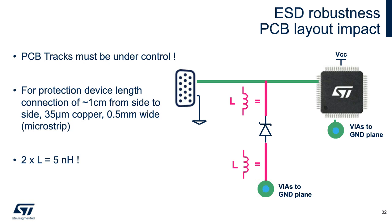Let's understand why it is very important to have the application PCB layout under control for good ESD robustness. The circuit presented shows the classic approach for protection placement in the application circuit, where the protection device is located between the connector and the IC device we want to protect. What is not visible at first view is that during an ESD disturbance, PCB track impedance starts to play an important role. High current and trace impedance cause unwanted overvoltage at the protected IC pin. Depending on the PCB technology, a PCB track impedance of around 1 nH per 8 mm of length is introduced.